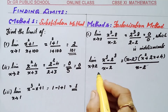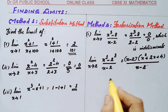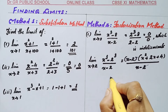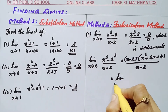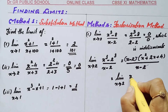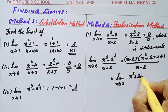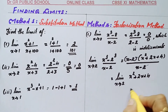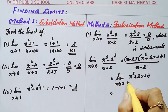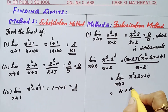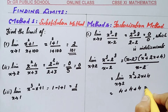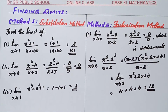After cancellation, substitute x as 2 in the remaining function x squared plus 2x plus 4: you get 4 plus 4 plus 4 equals 12. So the answer is 12. This is the factorization method — when substitution fails, use factorization.